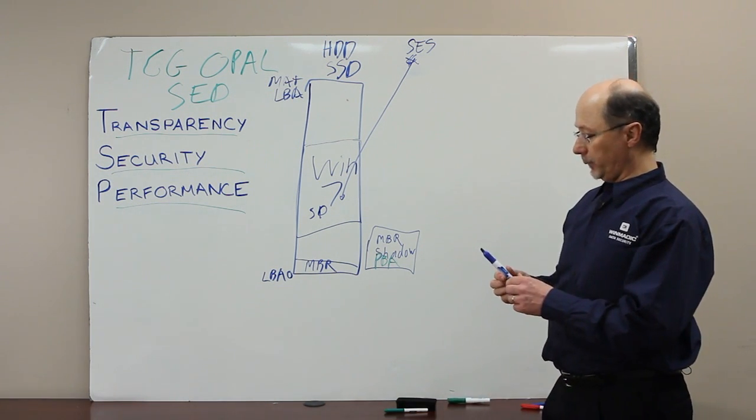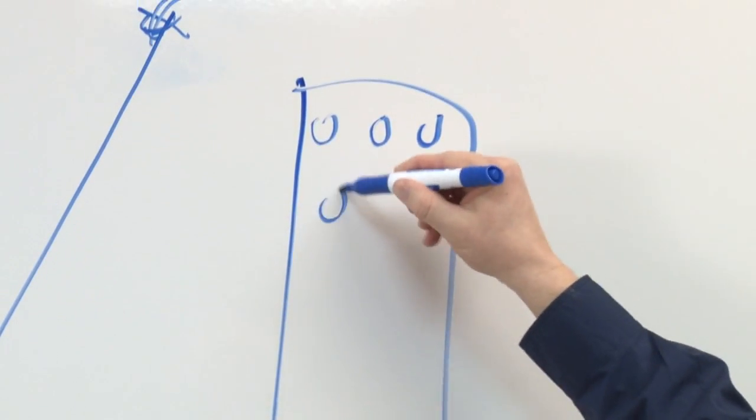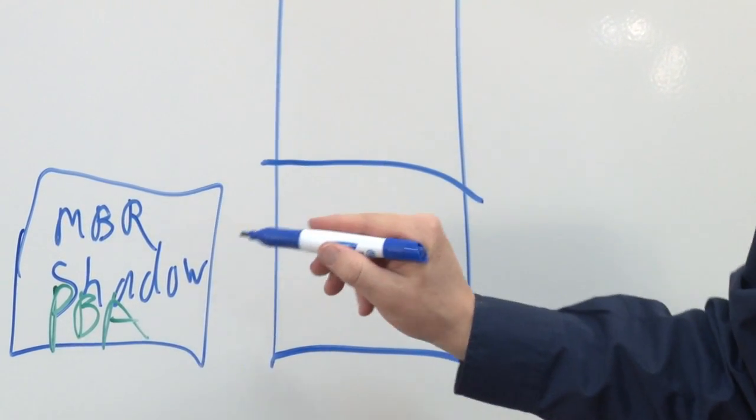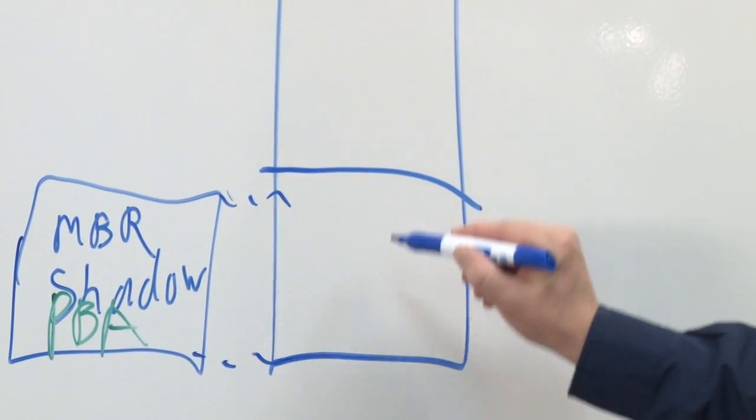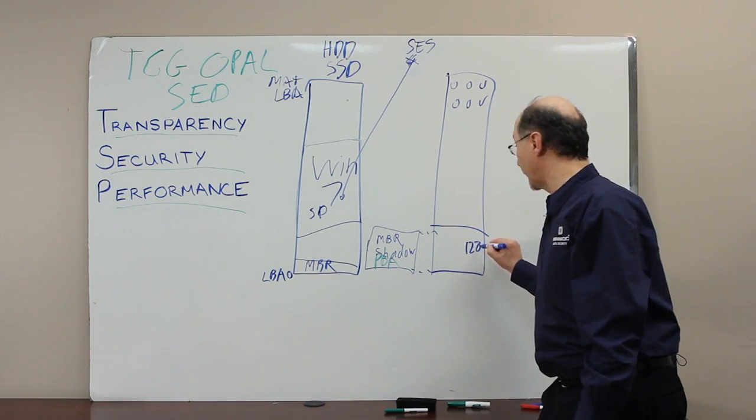When the drive is locked and then powered off, it would appear like this to an attacker. It would appear like it was all zeros, except the MBR shadow that we created that was previously off the map is now mapped into the first 128 megabytes of drive.